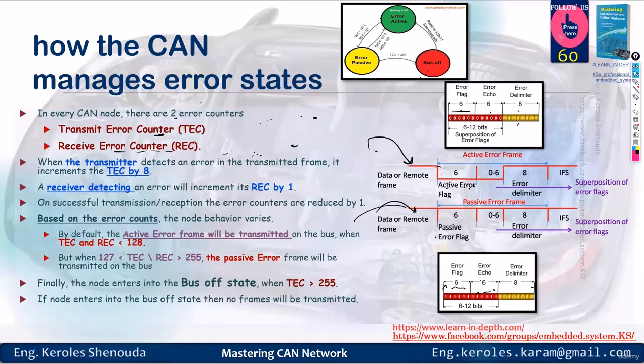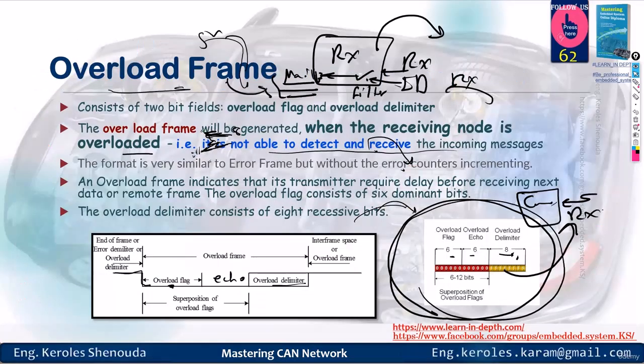But the main difference is that I increment a counter in the error frame, while in the overload I don't increment anything. So how does the CAN controller's MAC layer, which receives six zeros followed by six echo bits which are also zeros and then eight ones as delimiters, differentiate whether it's an error frame or an overload frame?